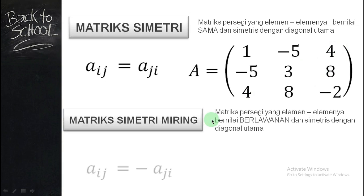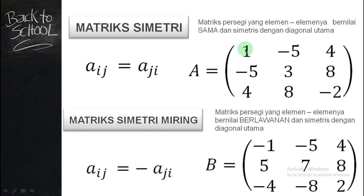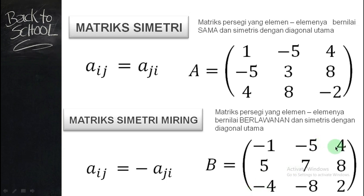Ada matriks simetri miring, perbedaannya: kalau untuk simetri angkanya sama, tapi kalau untuk simetri miring angkanya berlawanan. Jadi sama seperti tadi, setting dulu untuk diagonal utama. Kalau ini dilipat, untuk yang 5, nempel pasti di sini. Kenapa ini 5, min 5? Karena nilainya berlawanan — kalau ini plus maka di sini minus. Kalau di sini min 4, nempelnya pasti di pojok sana, maka kalau ini min, yang di atas plus 4. Kalau ini min 8, maka di sini 8. Menurut rumus untuk entry: matriks A_ij sama dengan min A_ji.